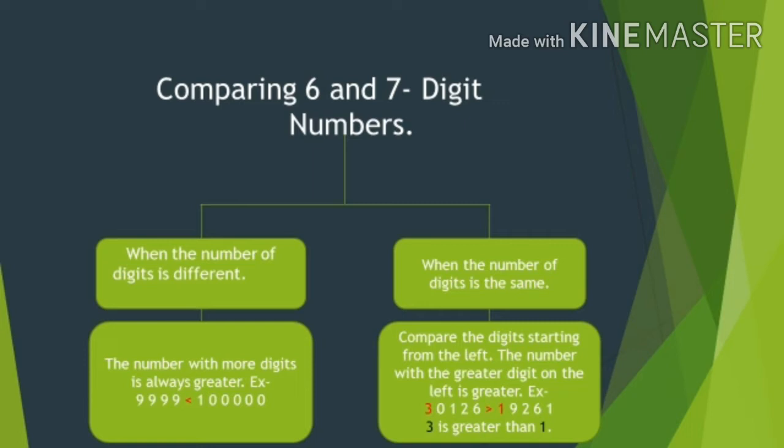For example, comparing 999 and 1000 — 1000 will always be greater than 999, because 999 has 3 digits while 1000 has 4 digits.